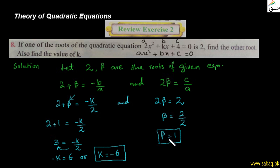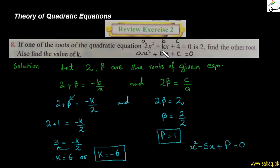تو ہمیں پتا چلا: k = −6 اور second root = 1۔ اب ہم اسے verify بھی کر سکتے ہیں: اگر roots معلوم ہوں تو quadratic equation x² − (sum of roots)x + (product of roots) = 0 بنتی ہے۔ 1 اور 2 کا sum 3 اور product 2 ہے۔ Verification آپ کو assignment کے طور پر دے رہا ہوں۔ اب question number 9 discuss کرتے ہیں۔